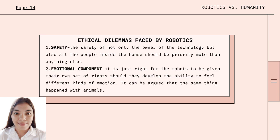One of the ethical dilemmas faced by robotics is safety. Not only the owner of the technology, but also all the people inside the house should be the priority more than anything else. Another ethical dilemma is the emotional component: it may be right to give robots their own set of rights should they develop the ability to feel different kinds of emotion. Looking at how fast technology progresses nowadays, it is not completely impossible for robots to develop emotions.